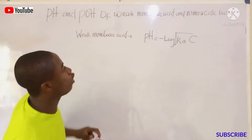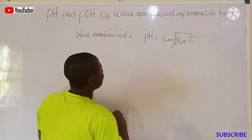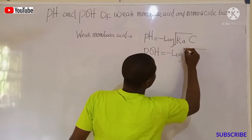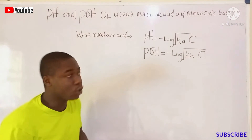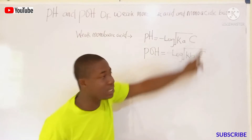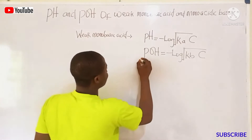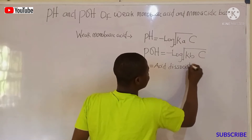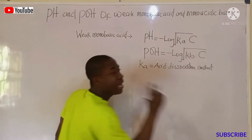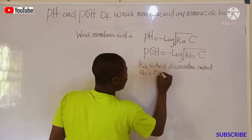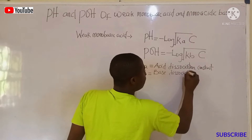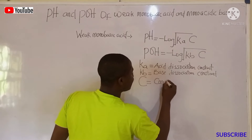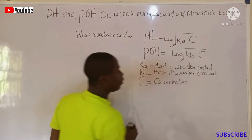We also have equations useful for solving the pOH of a weak monobasic base. The equation is: pOH = -log(√(Kb · C)). Now, Ka is the acid dissociation constant, Kb is the base dissociation constant, and C is simply the concentration of the compound.